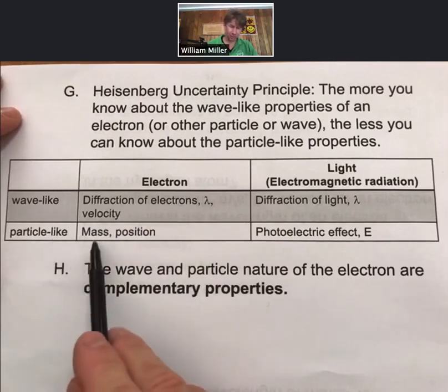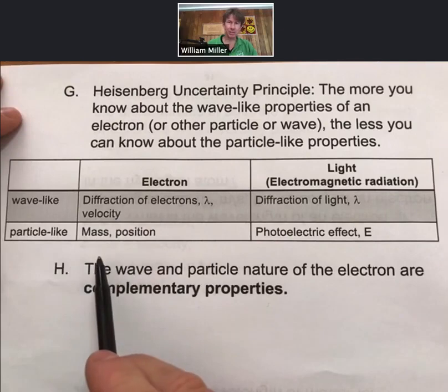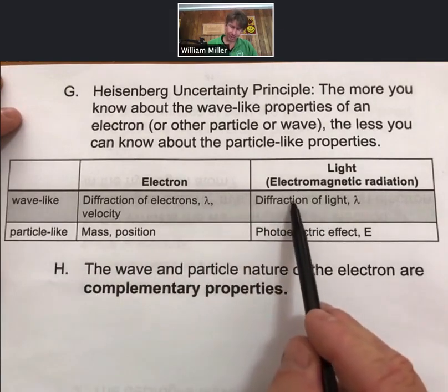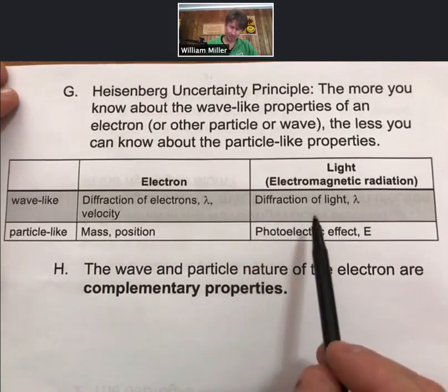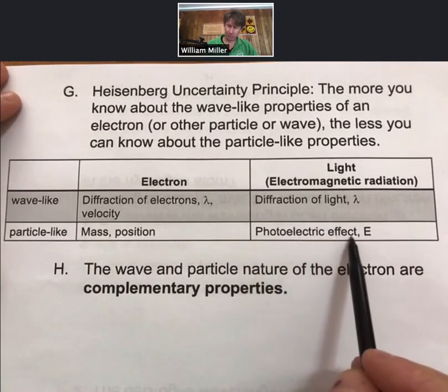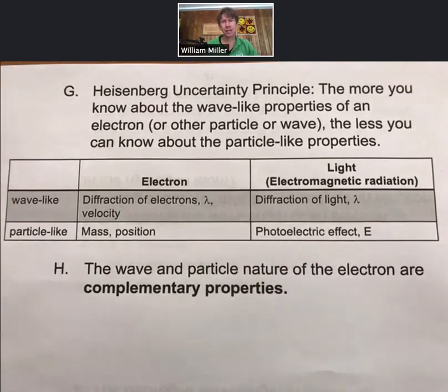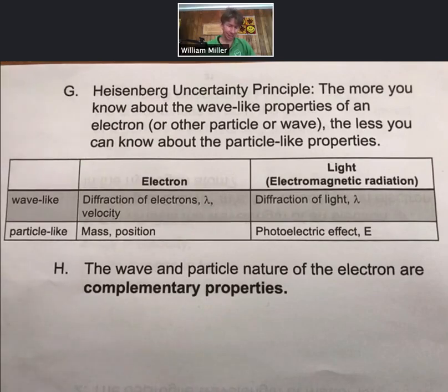And the particle-like properties would be either mass or position, while for light, the diffraction of light in a wavelength are definitely wave-like properties. And the photoelectric effect, or the fact that photons, light, electromagnetic radiation in general, has energy stored into it, and that energy can push something with a force and eject an electron from an atom, is acting like it has mass. So that's why it's particle-like.